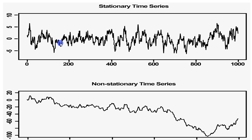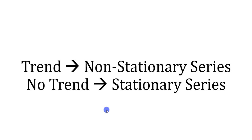On the contrary, for the non-stationary time series as seen in the second graph, you can see there is a trend — a downward trend where something was increasing and now it is decreasing. So with the help of these graphs, we can conclude that the series which has a trend is known as a non-stationary series, and the series which has no trend is known as a stationary series.